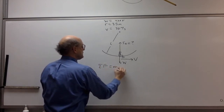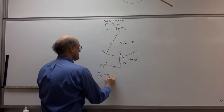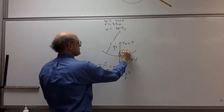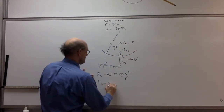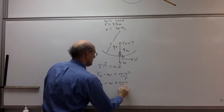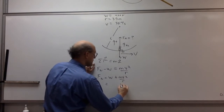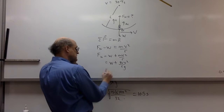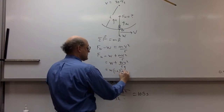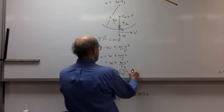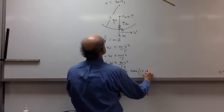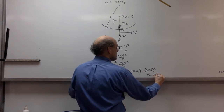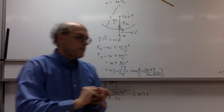From Newton's second law, calling up positive: F_N − W = mv²/r. Solving for F_N = W + mv²/r, where m = W/g. This simplifies to F_N = W × (1 + v²/(rg)). The radius is 35 meters, speed is 30 m/s, actual weight is 400 N, and g = 10 m/s². So F_N = 400 × (1 + 900/(35 × 10)).